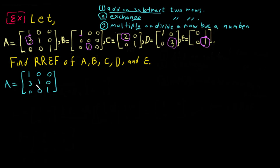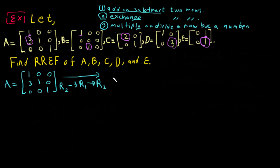We need to subtract the second row using the first row. We want to make this element zero, so three minus something should become zero. We need to multiply R1 by three, then do R2 minus 3·R1 → R2. Remember, the coefficient of the row being changed should always be 1.